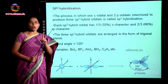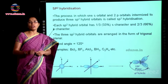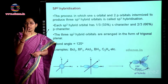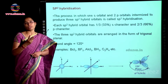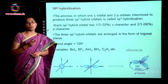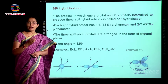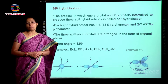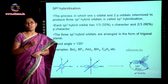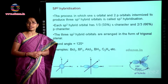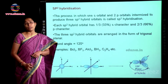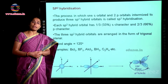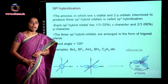The process in which one s orbital and two p orbitals intermix to form three sp² hybrid orbitals is called sp² hybridization. Since there are three electron pairs, they arrange in a trigonal planar manner with a bond angle of 120 degrees.